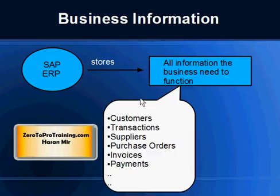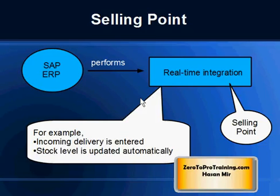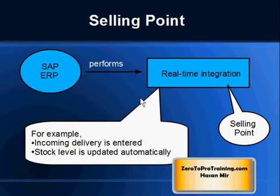SAP ERP software stores all the information that a business needs to function properly — for example, customers, their transactions, suppliers, purchase orders, invoices, payments, and so on. The main selling point for SAP ERP software — in fact for any ERP software — is that it provides real-time integration. For example, an incoming delivery is entered in the system and stock levels are updated automatically.